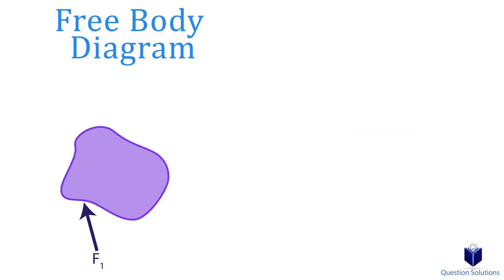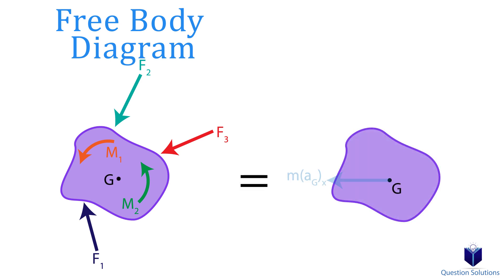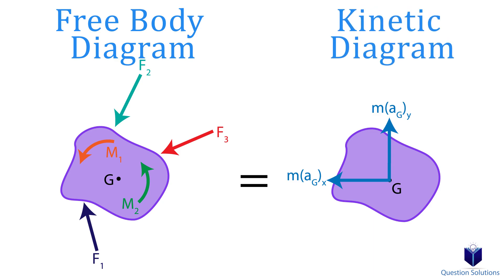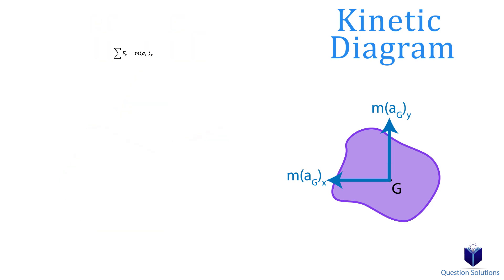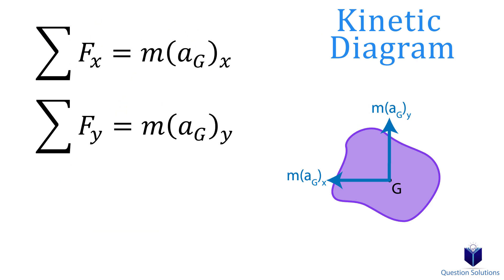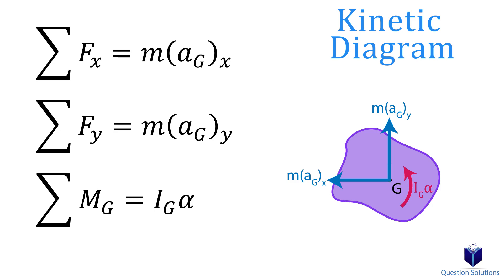Imagine a random object — for this example, I'm going to use a blob. There are forces and moments affecting this blob. If we find the center of mass, the sum of all external forces equals the mass times the acceleration caused by those forces. We can draw that as a kinetic diagram and represent those forces with equations for the x-axis and y-axis. The moments about the center of mass use this equation: the moment equals the mass moment of inertia multiplied by the angular acceleration.